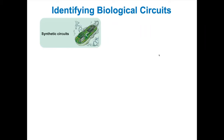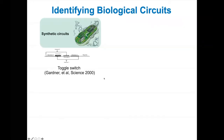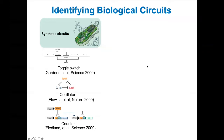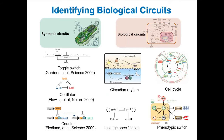We're inspired by studies in synthetic biology where gene-related circuits are designed and engineered into living cells to achieve certain functions — for example, toggle switches, oscillators, and counters. Similarly, we believe that within complex gene regulatory networks there exist biological circuits to drive cellular state transitions. There are indeed successful examples, such as gene regulatory circuits driving the cell cycle, lineage specification, and phenotype switches.